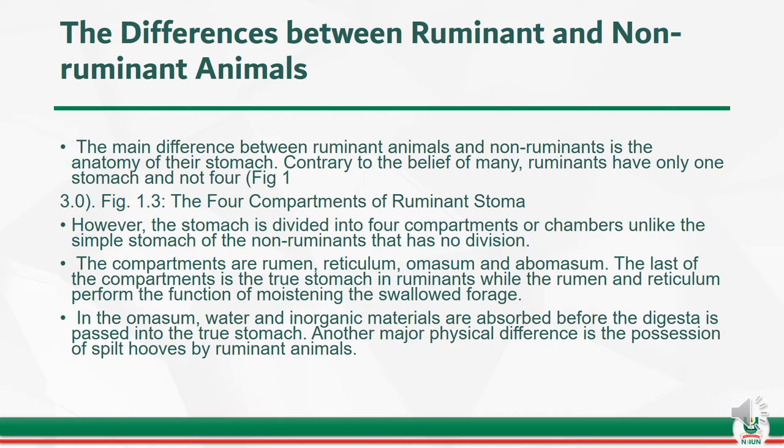The four compartments or chambers of ruminant animals are: rumen, reticulum, omasum, and abomasum. The last of the compartments is the true stomach in ruminants, while the rumen and reticulum perform the function of moistening the swallowed forage. In the omasum, water and inorganic materials are absorbed before the digesta is passed into the true stomach.